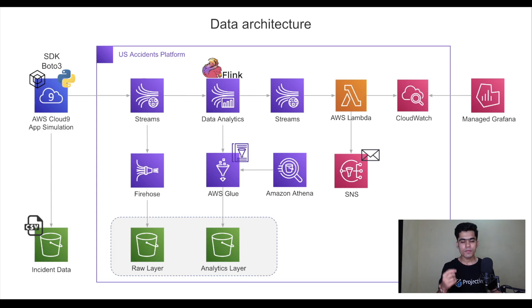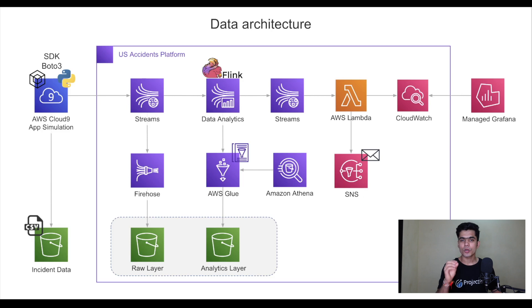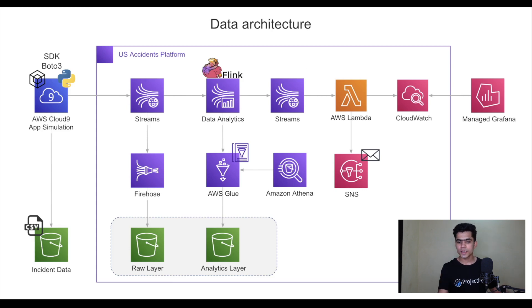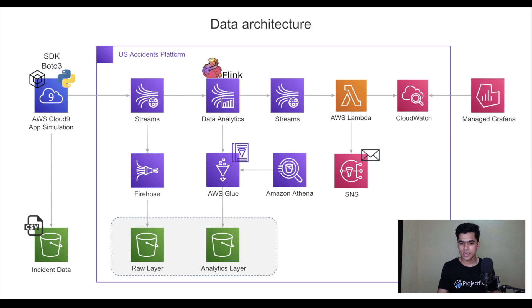We then put the data into AWS Lambda, which is the event-based compute system. Whenever new data arrives in the Amazon stream, it triggers the Lambda code, which executes based on what we've written. In our case, it sends a notification to the right user using SNS — the Simple Notification Service. You can add your email to get notified. The Lambda function takes streaming information and notifies the right user based on the accident that occurred. AWS CloudWatch stores all logs for each event.